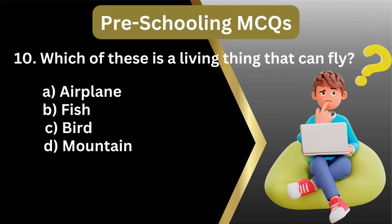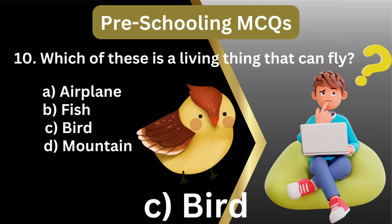10. Which of these is a living thing that can fly? A. Airplane, fish, bird, mountain. Answer: C. Bird.